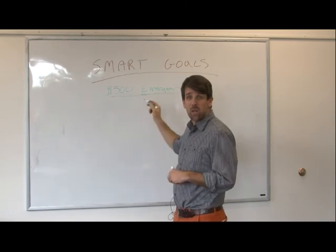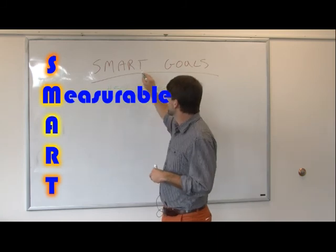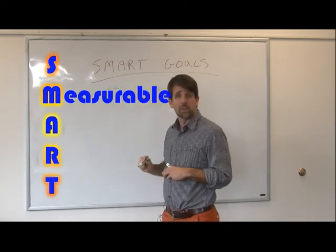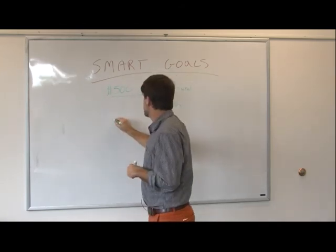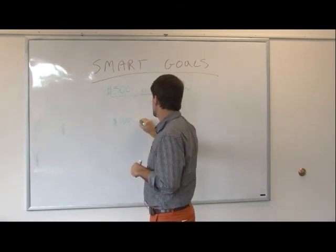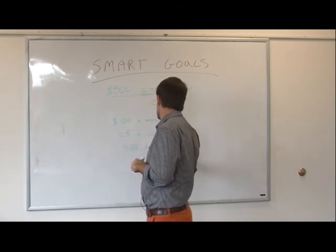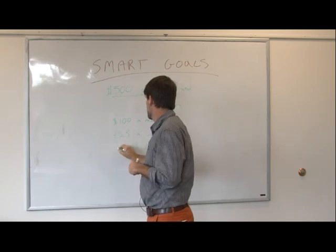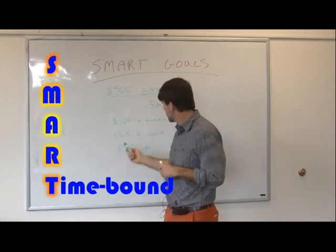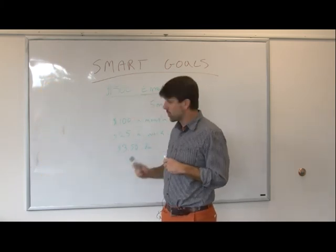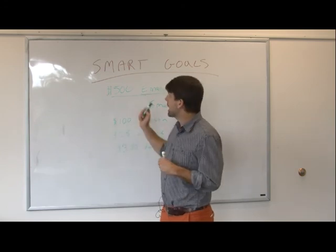Now for it to be measurable we want to have a combination of the time and how much we want to be saving each month. So for the sake of math I'm going to make this a five month goal. That means I need to save $100 a month, $25 a week, $3.50 a day. So now I have measurable and time bound. I know how much time I need in order to make this goal work. I can measure if I'm moving towards this goal by saying that I saved $25 this week.